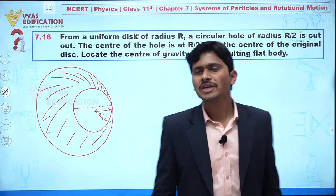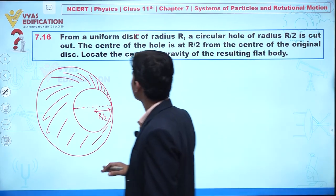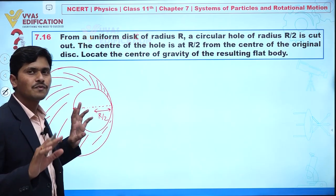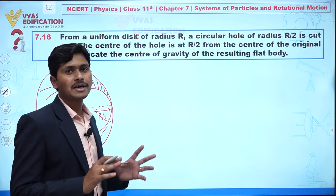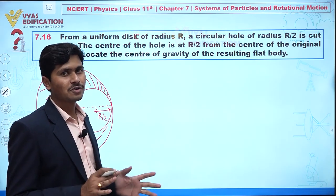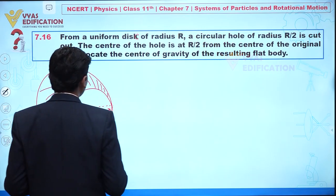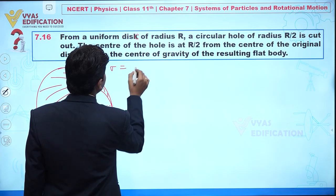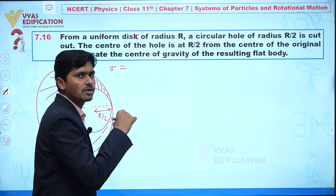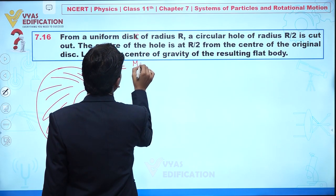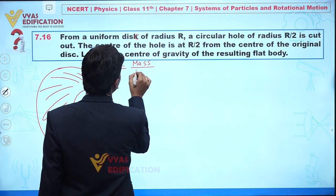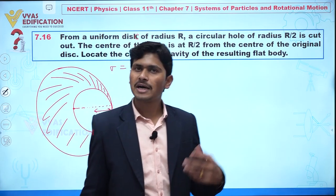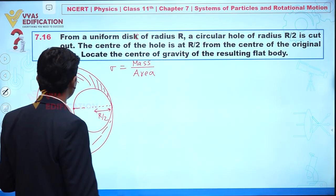Our objective in this question is to locate the center of gravity of the resultant flat body. This is a very important question. I am assuming a term sigma, which is defined as mass per unit area.